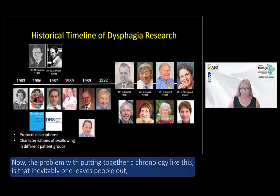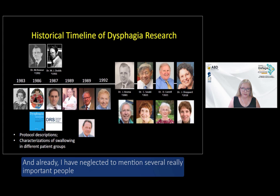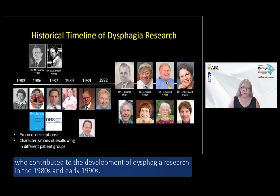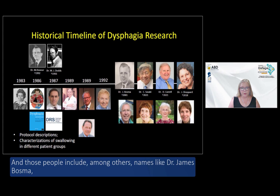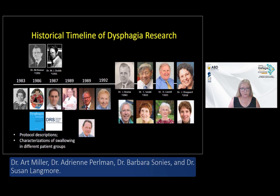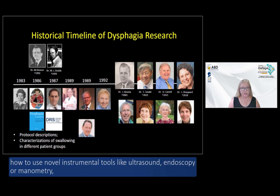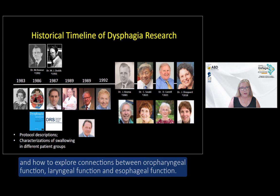A chronology like this inevitably leaves important people out. Those who contributed to dysphagia research in the 1980s and early 1990s include Dr. James Bosma, Dr. Clarence Sasaki, Dr. Don Castell, Dr. Justine Joan Shepard, Dr. Art Miller, Dr. Adrian Perlman, Dr. Barbara Sunnis, and Dr. Susan Langmore. Their seminal work helped us understand the neurophysiology of swallowing, how to use novel instrumental tools like ultrasound, endoscopy, or manometry, and how to explore connections between oropharyngeal, laryngeal, and esophageal function.